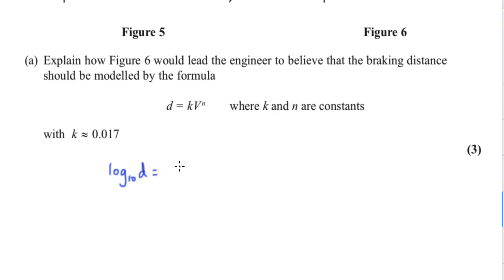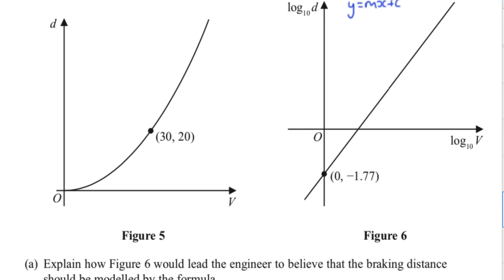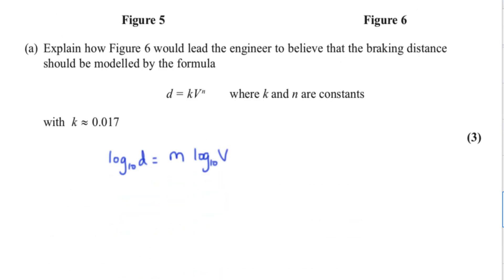is equal to some multiple of log to the base 10 of v plus k, but they've told us c is negative 1.77.